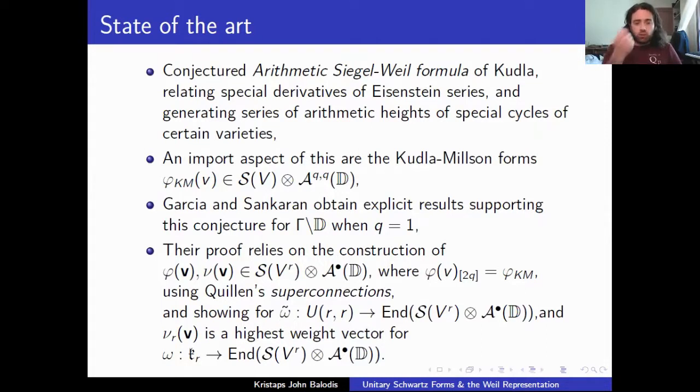And so what we actually do is we look at a certain sub-algebra of the Lie algebra we get when we do that. And we look at this special form. So you'll notice I've made a, there's a slight difference in notation. There's a new sub-r there. So this just refers to a certain piece of this form, ν. And so it gets acted on by this differentiated Weil representation. And a key step in the proof of Garcia and Sankaran is showing that this is a highest weight vector. So that's something we're going to discuss in a moment as well.